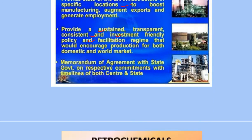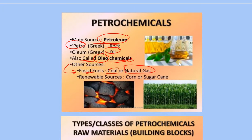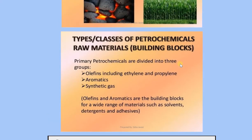We need to know the benefits of the PCPIR region. Regarding etymology: 'petro' means rock and 'ol' means oil, so petroleum literally means rock oil. The main sources of petroleum are coal and natural gas — fossil fuels — and renewable sources like corn, sugarcane, and oil. There are types and classes of petrochemicals: raw materials and building blocks.